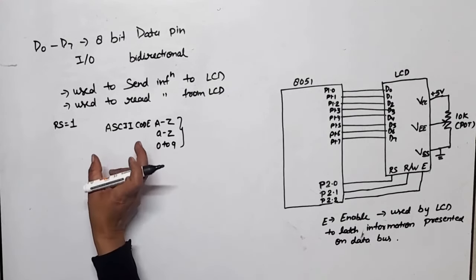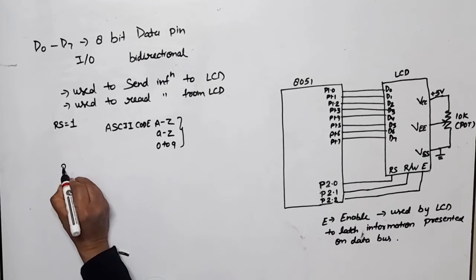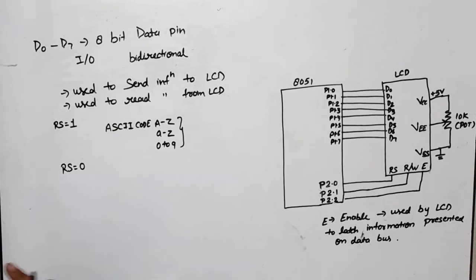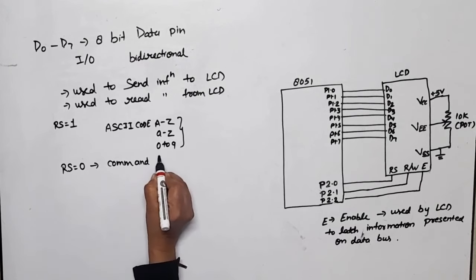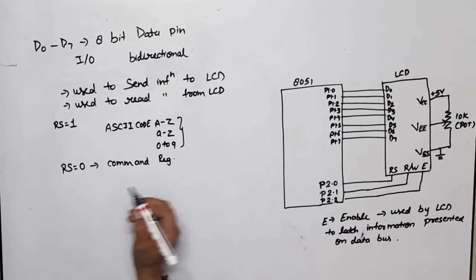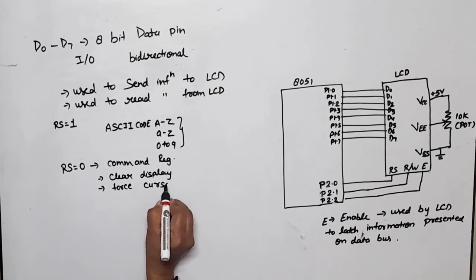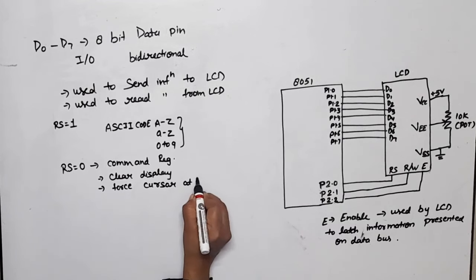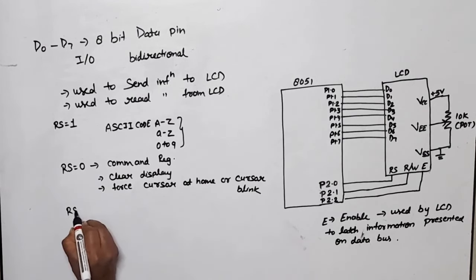Now what is the use of RS equals 0? I already mentioned that this is used to select command register. In this case, which type of commands are sent? Commands for clear display or screen, to force cursor at home, or cursor blink.